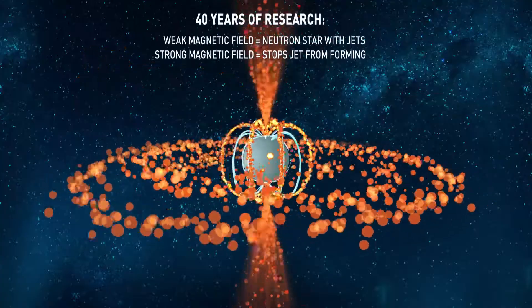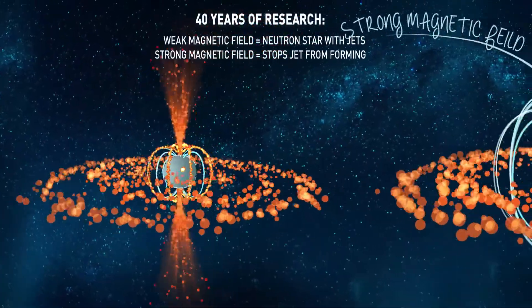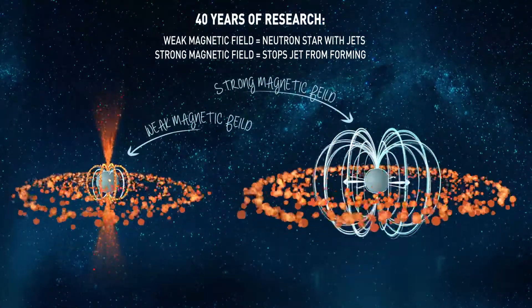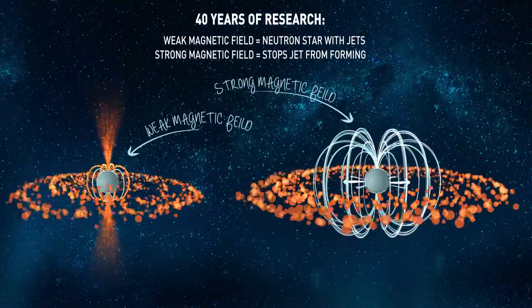For 40 years, we thought these jets were only possible when a neutron star's magnetic field was relatively weak. We thought a strong magnetic field would stop the gas that's needed to form the jets from reaching the neutron star.